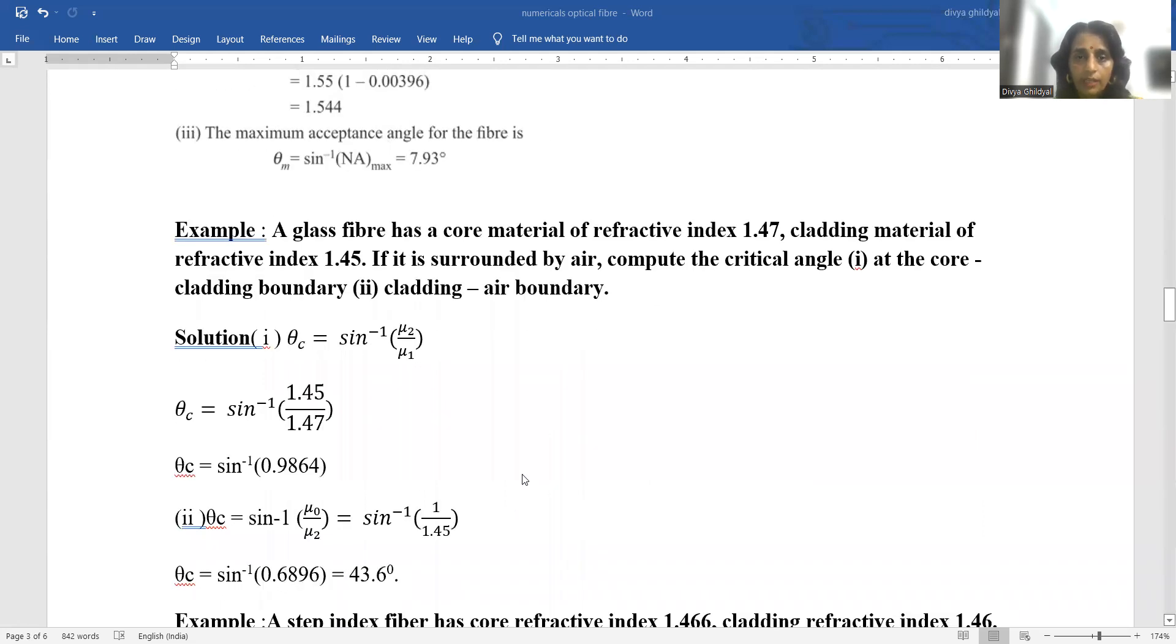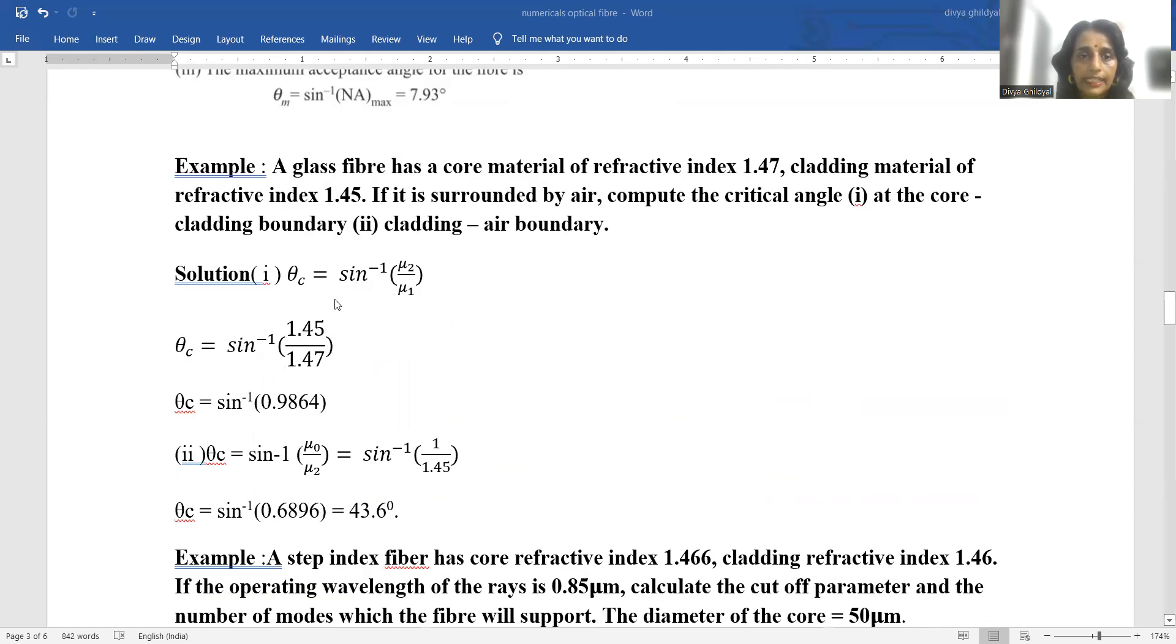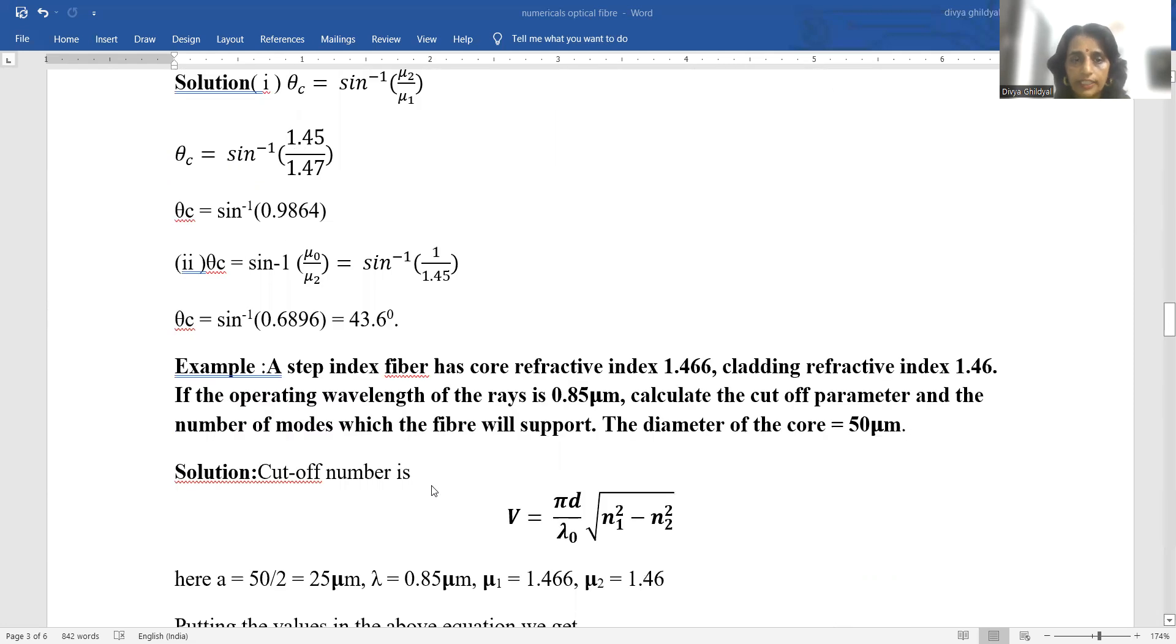A glass fiber has a core material refractive index 1.47, cladding material refractive index 1.45. If it is surrounded by air, compute the critical angle at the core cladding boundary and the cladding air boundary. Critical angle equals sine inverse mu2 by mu1, which equals sine inverse 1.45 by 1.47, and you get the answer for your critical angle.